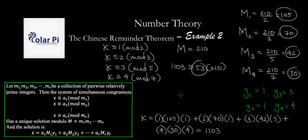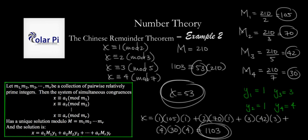So, our final answer is X equals 53, and this is our unique answer. Notice that 1103 is also a solution, but this is our only unique solution, because this number and this number are in the same congruence class, mod 210.